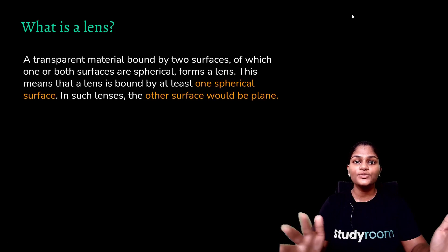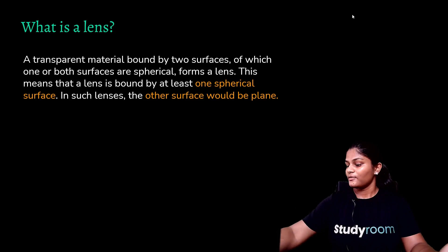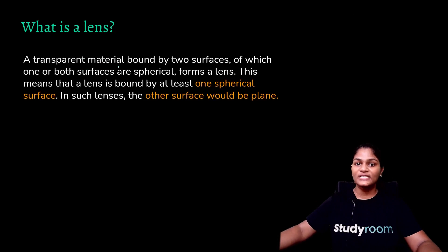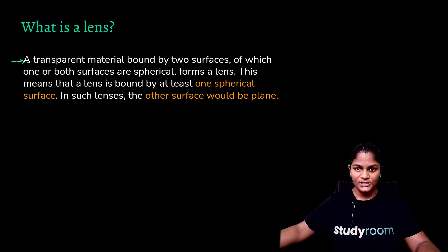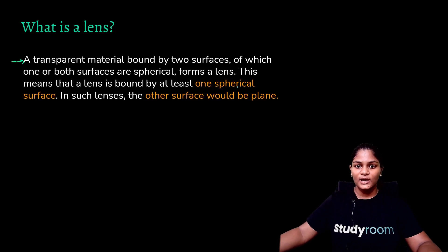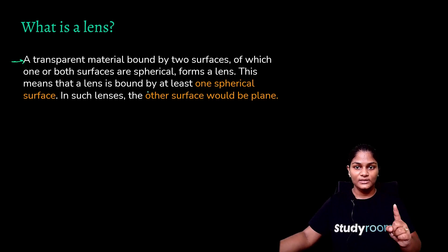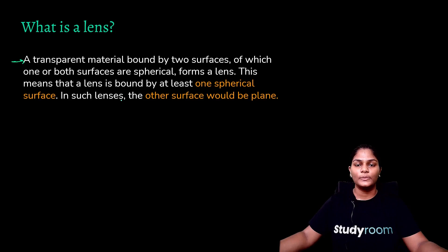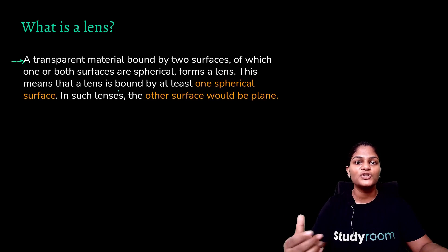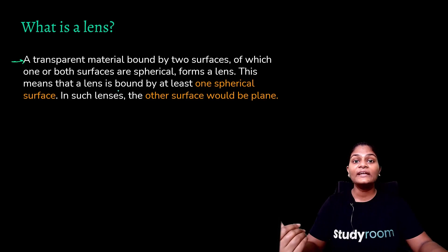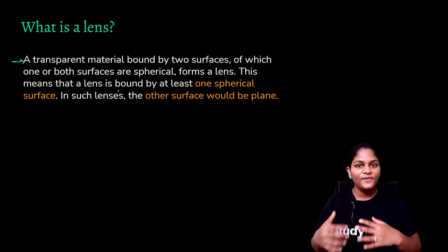First we are going to see what exactly is a lens. The PPT says: a lens is a transparent material bound by two surfaces of which one or both surfaces are spherical. This means that a lens is bound by at least one spherical surface; in such lenses, the other surface would be plain. Basically, a lens is made up of a transparent material — which is glass — and it has either one or both spherical surfaces.